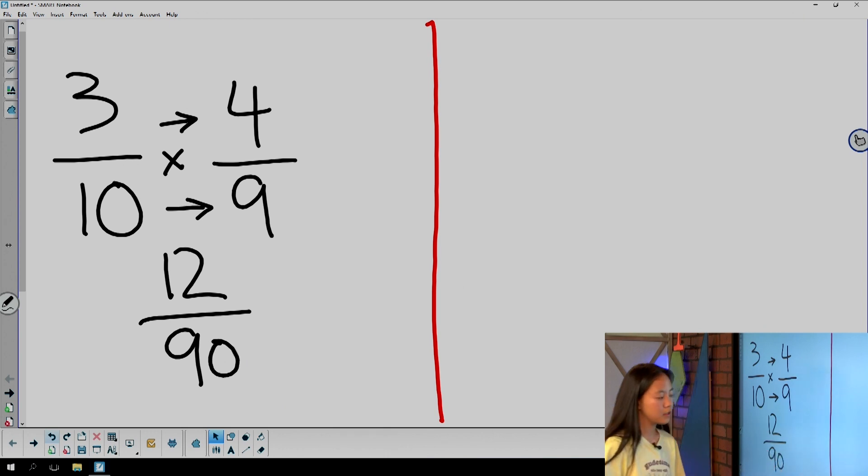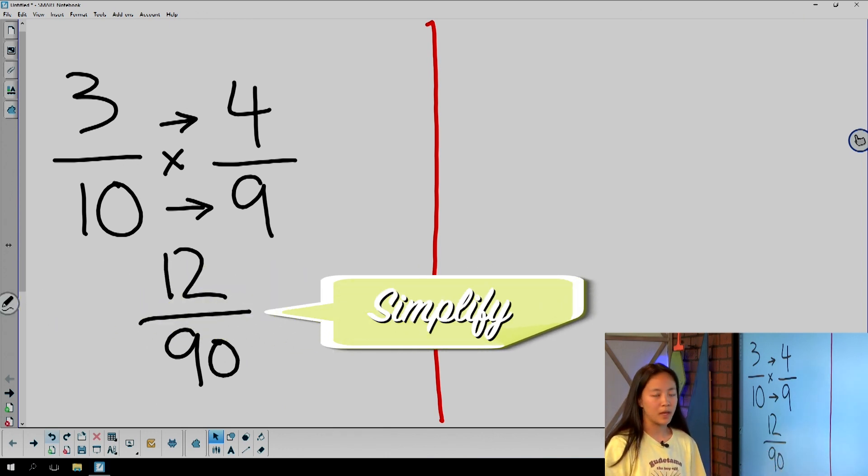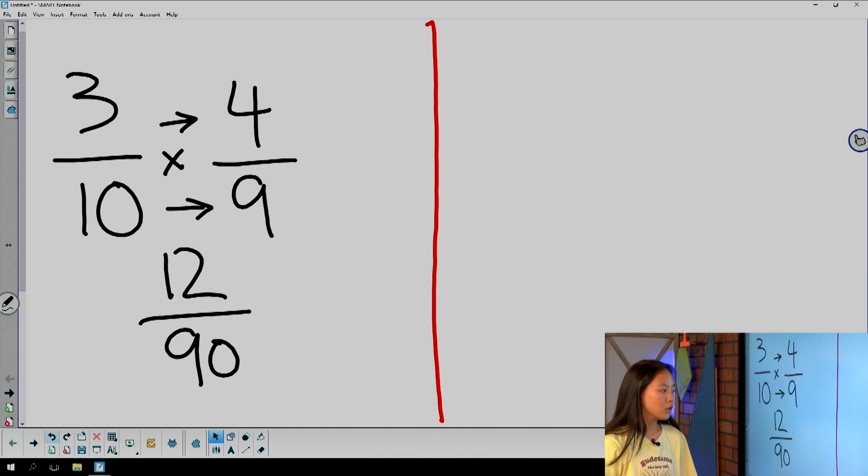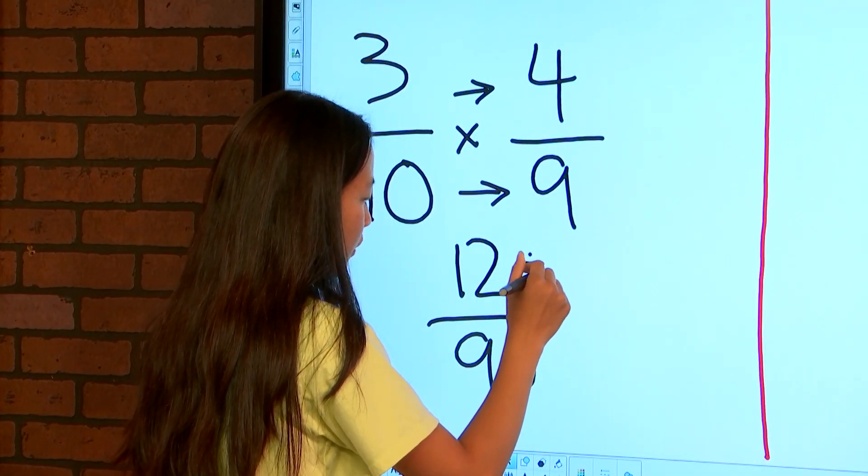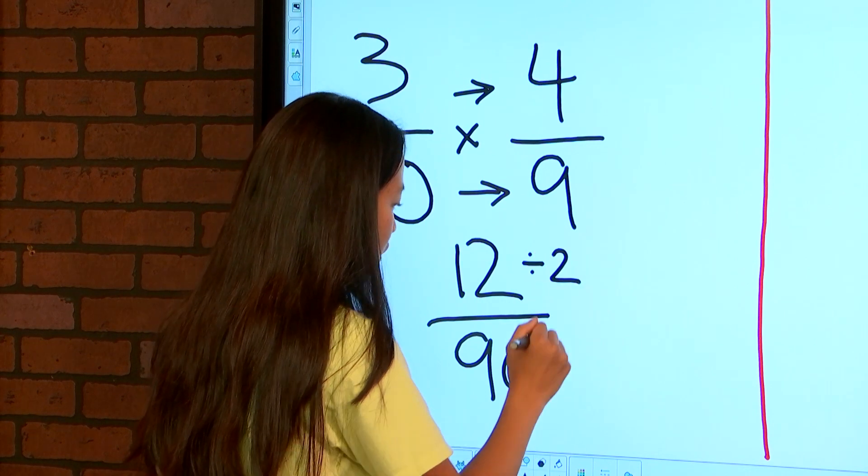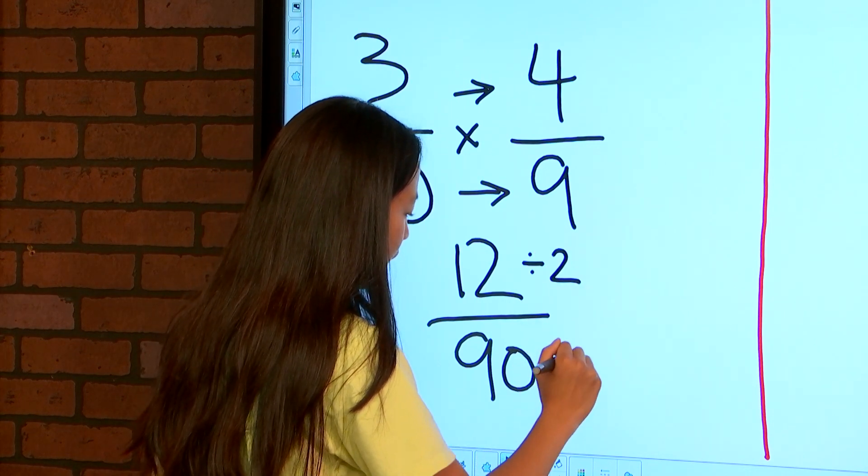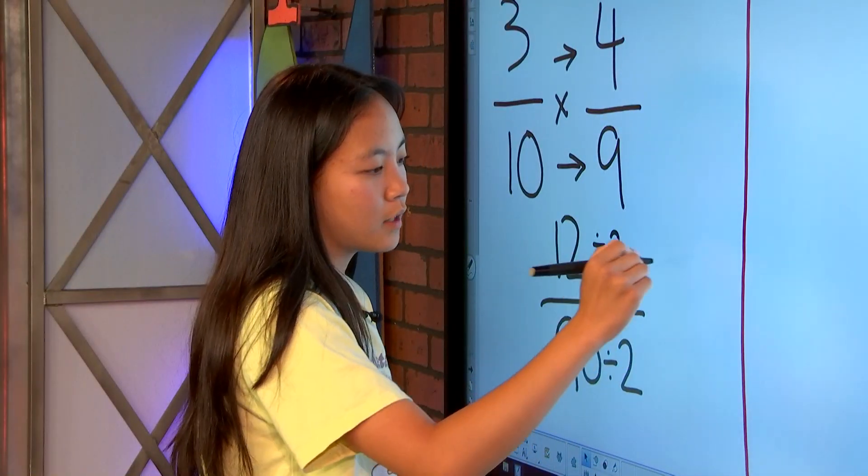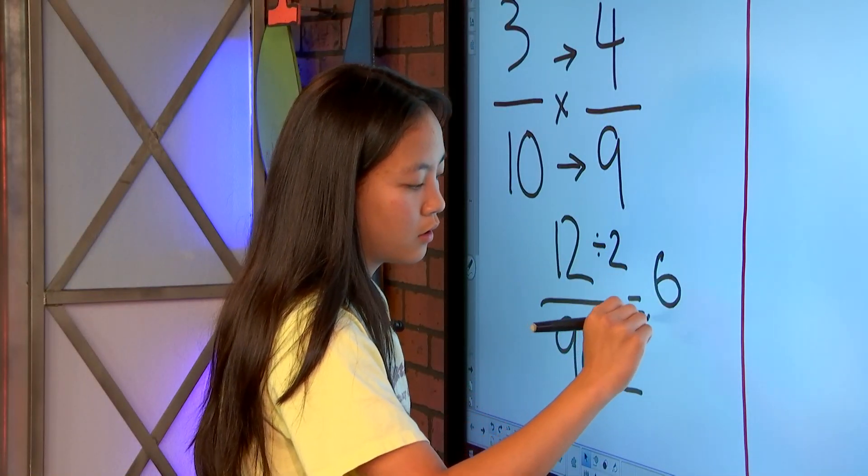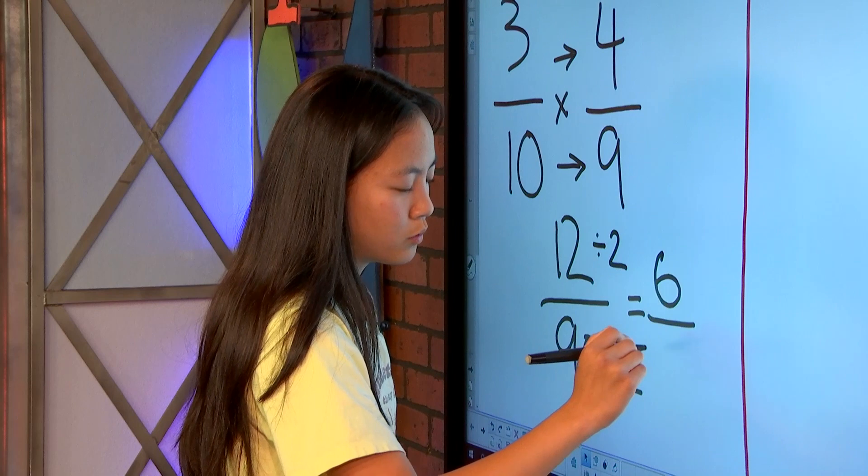Now this can be further simplified into a proper common fraction. So you could divide 12 by 2, and 90 by 2. And so 12 divided by 2 would equal 6, and 90 divided by 2 would equal 45.